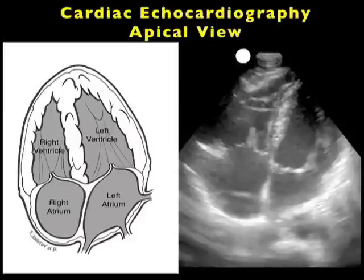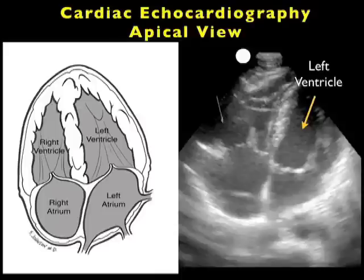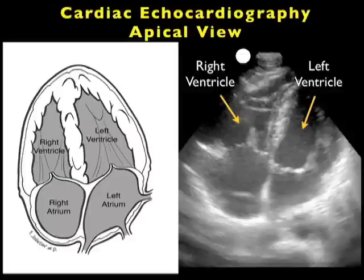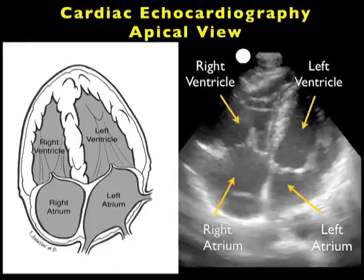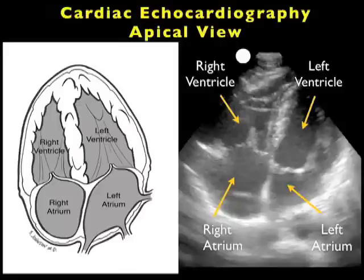Now let's learn how to interpret the images that we'll obtain. We see here a pictorial to the left and an ultrasound image to the right. As we're imaging from the apical view of the heart, we're closest to the ventricles. We see the left ventricle to the right of the screen and the right ventricle adjacent. The atria will be further away, posterior to the ventricles — the left atrium just below the left ventricle and the right atrium below the right ventricle. We also see the valves: the tricuspid valve to the left and the mitral valve to the right in between the left atrium and left ventricle. We can also appreciate the white lines surrounding the heart, which is the pericardium.